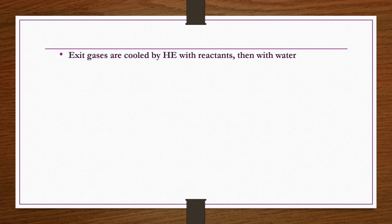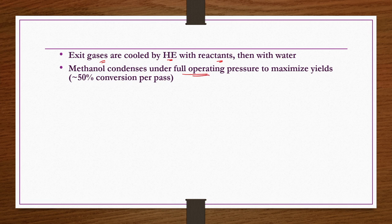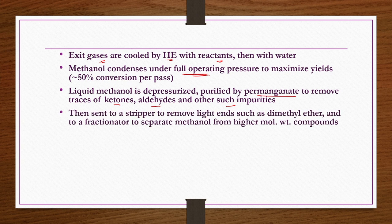Exit gases from the reactor are cooled by heat exchangers with reactants and then with water. Methanol condenses under full operating pressure to maximize yields — approximately 50 percent conversion per pass. Liquid methanol is depressurized, purified by permanganate to remove traces of ketones and aldehydes, then sent to a stripper to remove light ends such as dimethyl ether, and to a fractionator to separate methanol from higher molecular weight components.